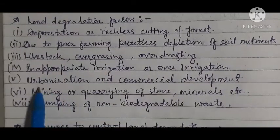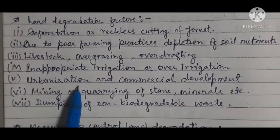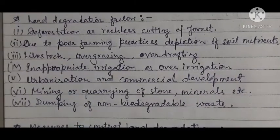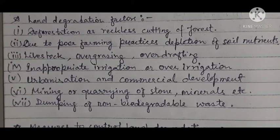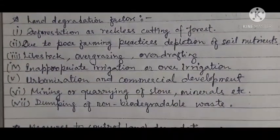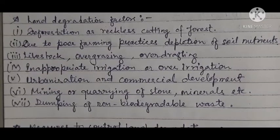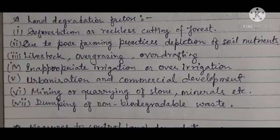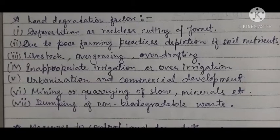Now next is urbanization — when urbanization happens, factory and industry setups happen. The waste that comes out gets deposited in the top layer of soil, which causes soil to degrade. And commercial development — it is related to commerce and economy. To develop economic conditions, more factories and industries are set up, more attention is given to trade and transport, due to which agricultural land or cultivable land keeps getting wasted.